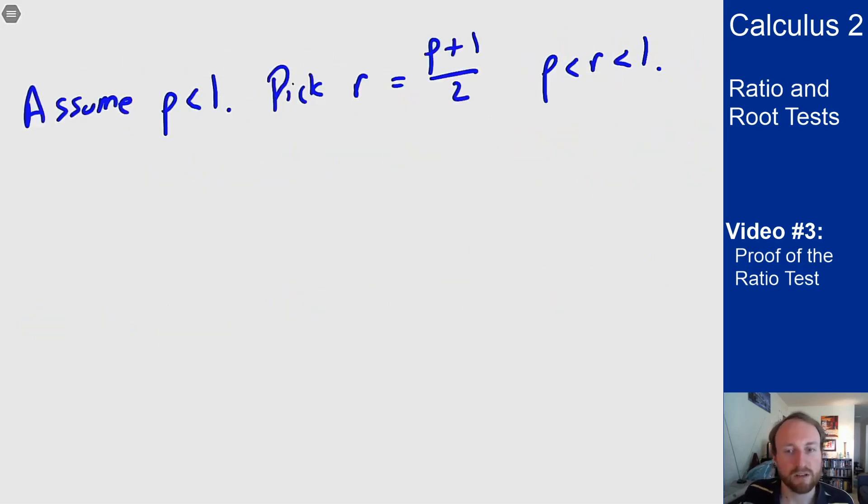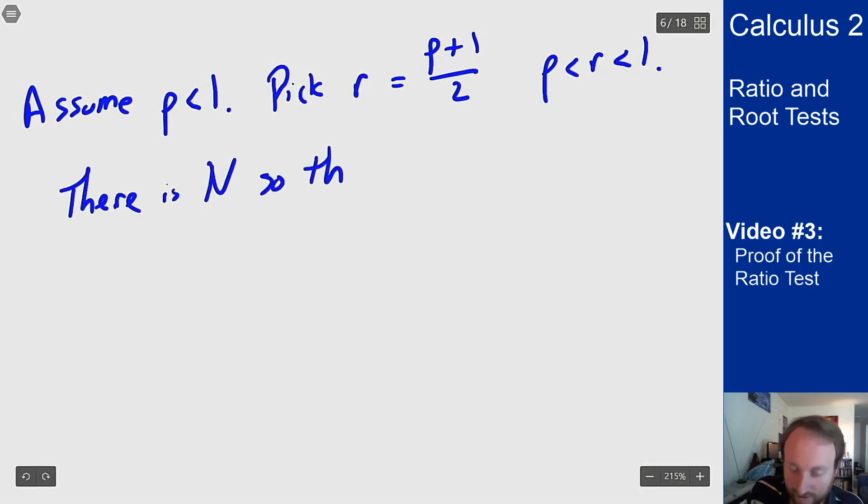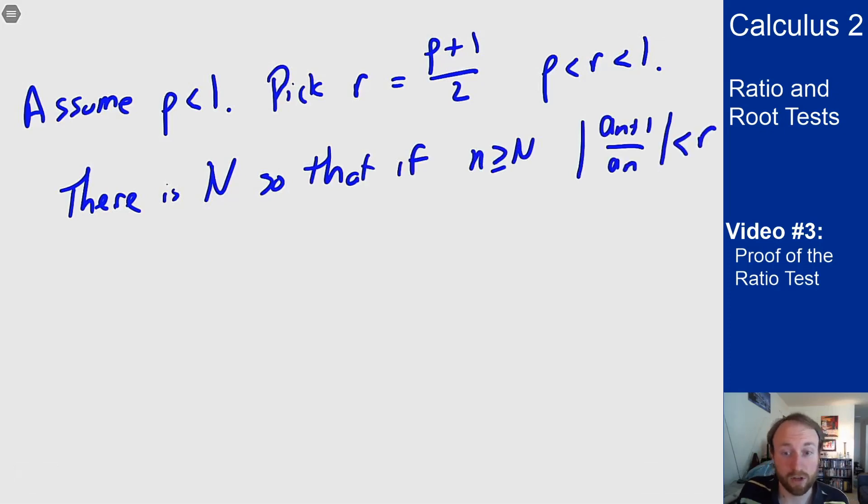Now because my ratios limit to ρ, eventually far enough out in the series the ratio is less than r. So because r is bigger than ρ, we have that there is an N, capital N, so that if little n is bigger than N, we have that this ratio is less than r. It has to converge to ρ, so eventually it has to be below r if we're out in the sequence because it is a limit.